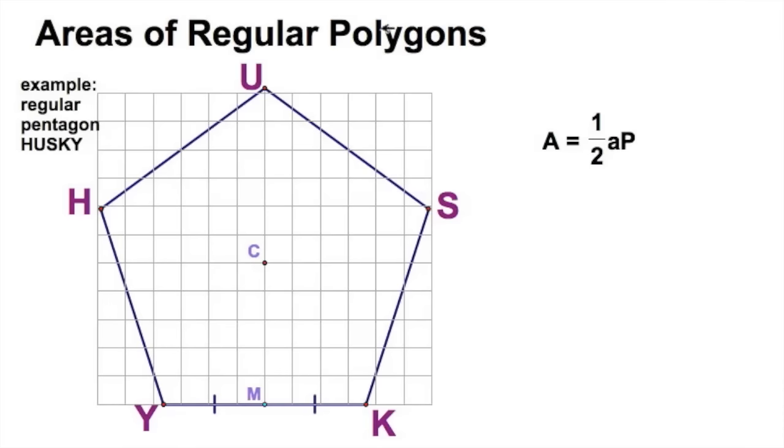Well, let's find the area of a regular polygon. We're going to use this regular pentagon, Husky, for our example. You've seen this formula, area is one-half apothem times perimeter, but do we understand it? We'll get back to that later. Let's look at the concept first of what area actually is.